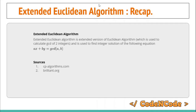To recap: the Extended Euclidean Algorithm is the extended version of the Euclidean Algorithm, which is used to calculate the GCD of two numbers. The extended version is also used to find the coefficients x and y in the equation ax + by = gcd(a, b). The sources are cpalgorithm.com and brilliant.org — links to both articles are in the description.